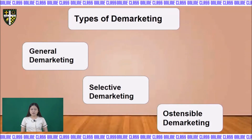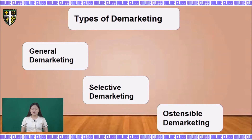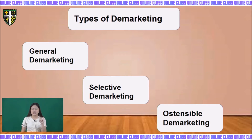Next, what are the types of demarketing? As you can see, we have three types: general demarketing, selective demarketing, and ostensible demarketing.